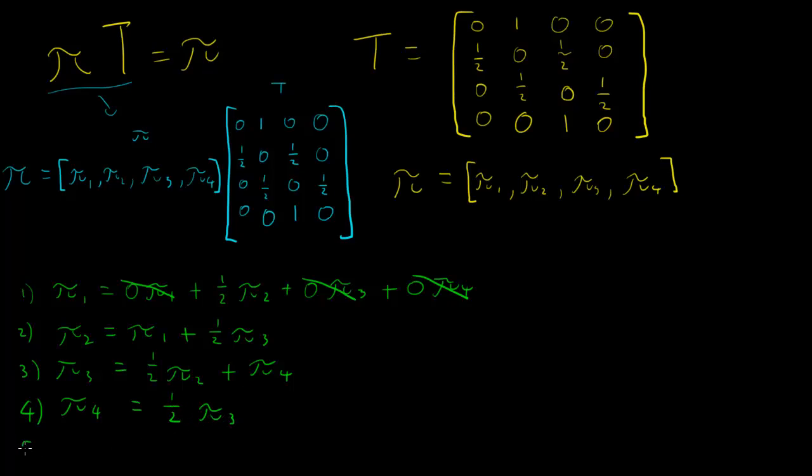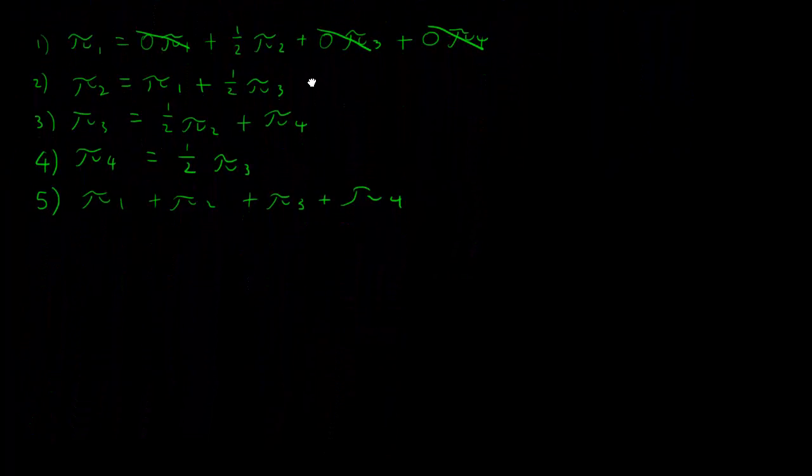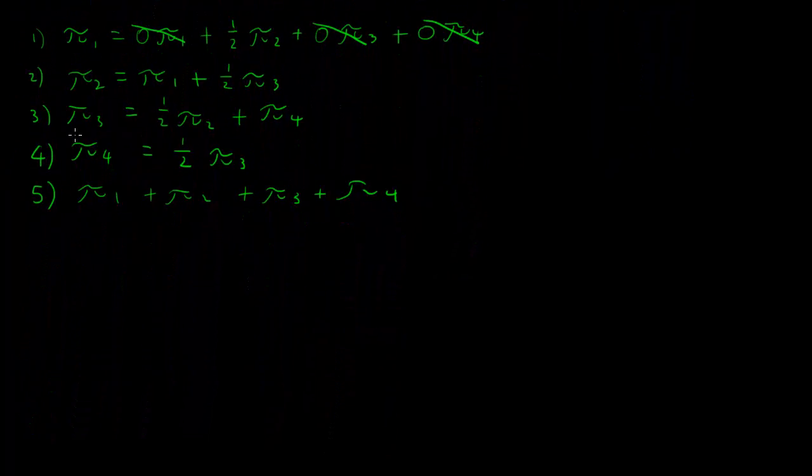And we do have a fifth equation that we can use. We know that all of these must sum up to 1, because otherwise every time we go through a transition we would actually get a result larger than this. Anyway, I'm sure there's much better proofs than that. You can intuitively see it.